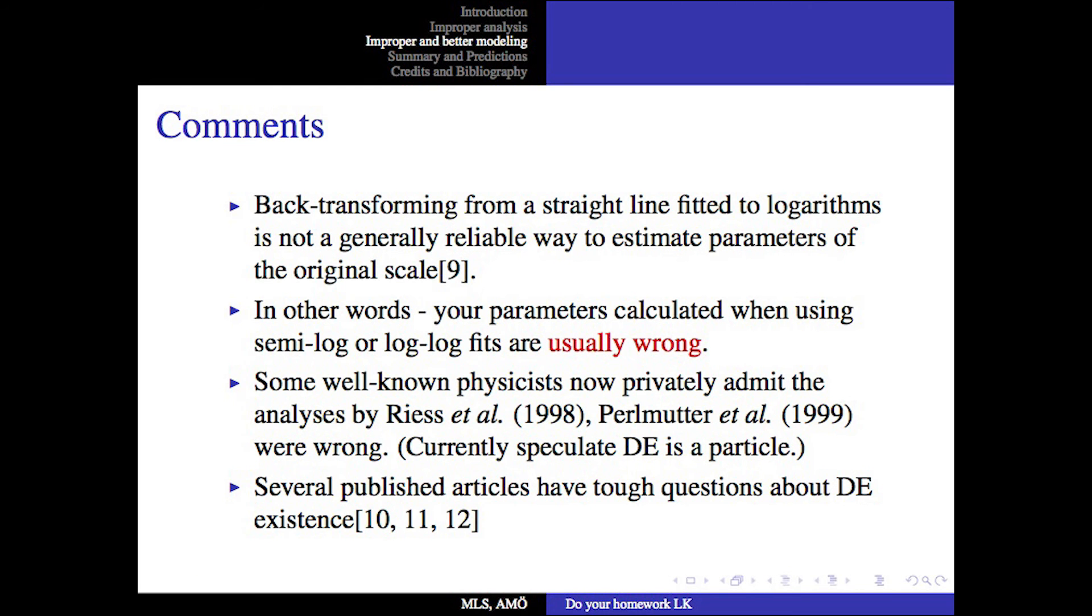Here's our comments. Back transforming from a straight-line fit to logarithms is not a generally reliable way to estimate parameters of the original scale. In other words, your parameters calculated when using semi-log or log-log fits are usually wrong. Some well-known physicists now privately admit the analysis by Riess in 98 and by Perlmutter in 99 were wrong. These fellows also currently speculate dark energy as a particle, which is really reaching for special privilege. Several published articles have tough questions about dark energy existence.